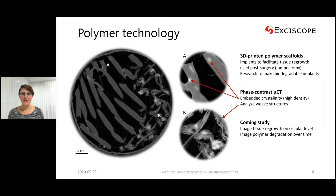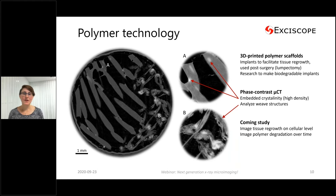Polymers is another great example of low density materials that often have interesting small structures with low contrast. In this example, a group is working on developing scaffolds to be used as post-surgical implants.